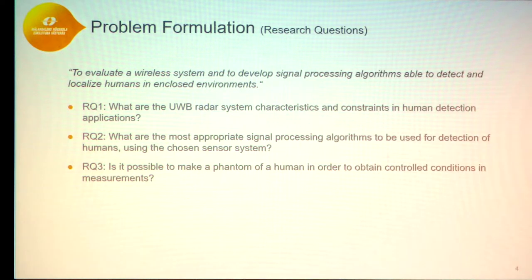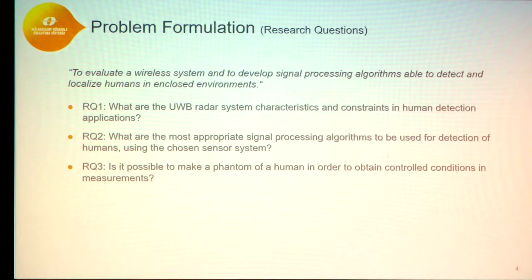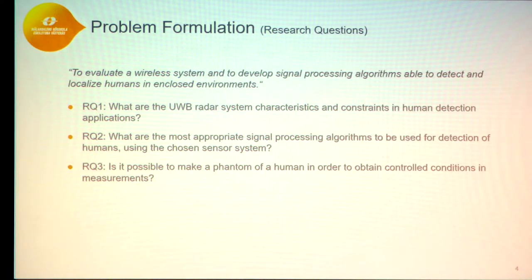Other applications include indoor positioning of humans in elderly care and living assistance for Alzheimer patients. The research goal is to evaluate a wireless system and to develop signal processing algorithms able to detect and localize humans in enclosed environments. Research question one is about the characteristics, drawbacks, and constraints of the system. Research question two is about appropriate signal processing algorithms for this specific sensor system. Research question three is about whether it is possible to use a phantom to obtain controlled conditions for studies and measurements.